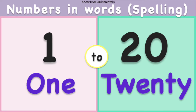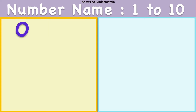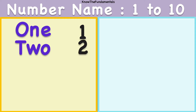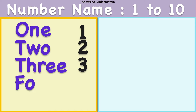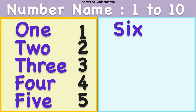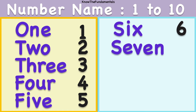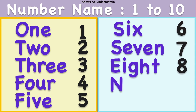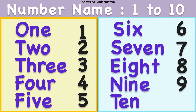Numbers in words from 1 to 20. O N E - 1. T W O - 2. T H R E E - 3. F O U R - 4. F I V E - 5. S E V E N - 7. E I G H T - 8. N I N E - 9. T E N - 10.